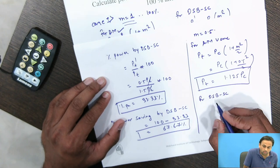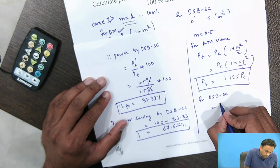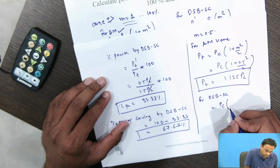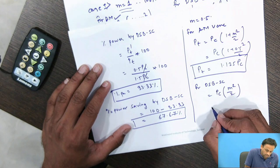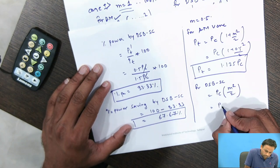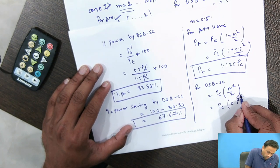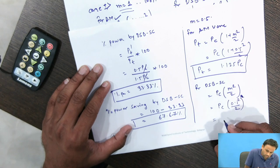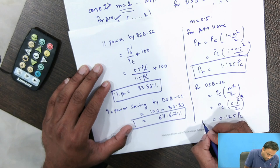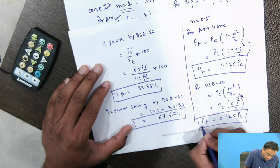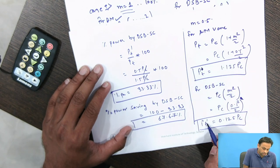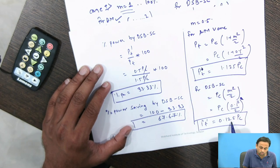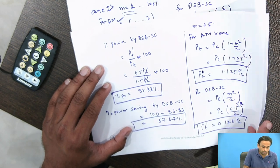For DSB-SC with m = 0.5, Pt' = Pc·m²/2 = Pc·(0.5²)/2 = 0.125 Pc. So Pt' = 0.125 Pc.